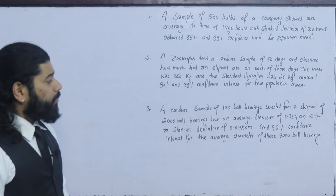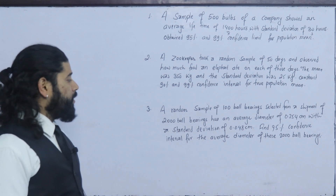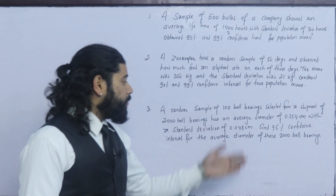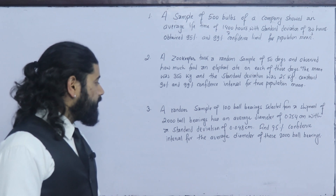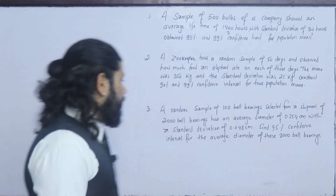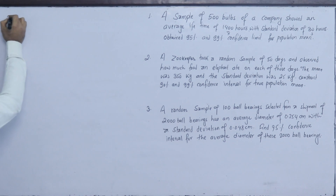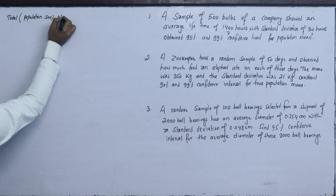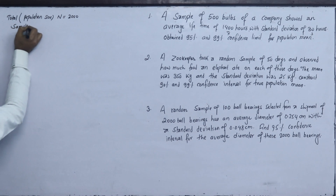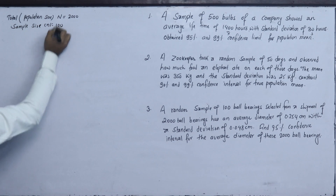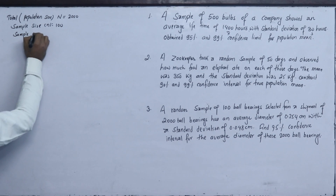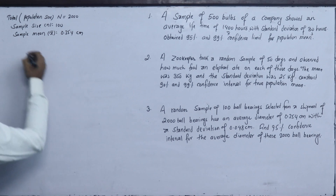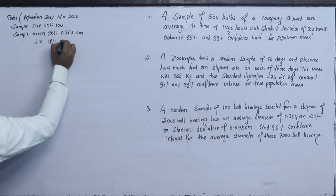Third question: a random sample of 100 ball bearings selected from a shipment of 2000 ball bearings has an average diameter of 0.354 cm with a standard deviation of 0.048 cm. Find the 95% confidence interval for the average diameter of these 2000 ball bearings. The total population size N is 2000. The sample size n is 100. The sample mean x̄ is 0.354 cm.